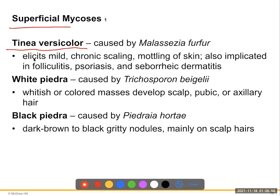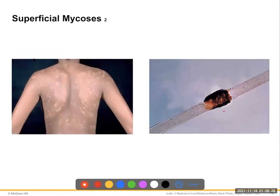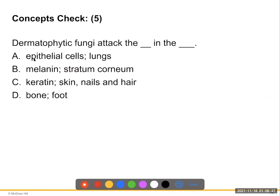Superficial mycoses: tinea versicolor caused by Malassezia furfur elicits mild chronic scaling and mottling of the skin, and is implicated in folliculitis, psoriasis, and seborrheic dermatitis. White piedra is caused by Trichosporon beigelii, forming white nodules on scalp, pubic, or axillary hair. Black piedra, caused by Piedraia hortae, forms dark brown to black gritty nodules mainly on scalp hairs. Dermatophytic fungi attack the keratin in skin, nails, and hair.